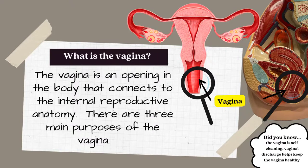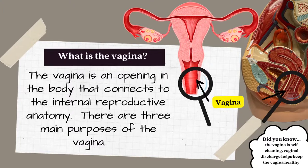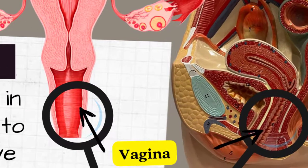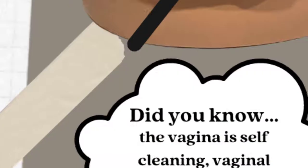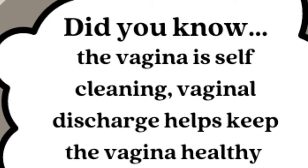The vagina is an opening in the body that connects to the internal reproductive anatomy. There are three main purposes of the vagina. Did you know the vagina is self-cleaning? Vaginal discharge helps keep the vagina healthy.